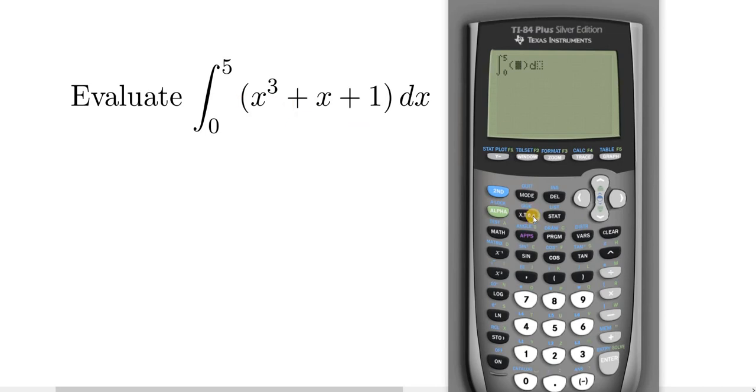X cubed, so the variable key is right here. So X, then you need an exponent key, that's this one. And then three.